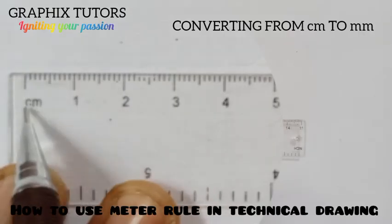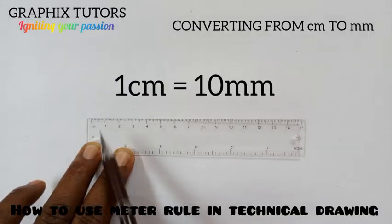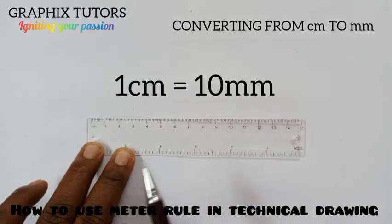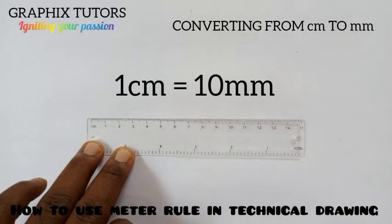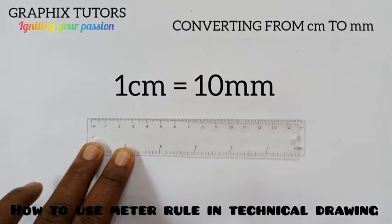So this simply is telling you that for every one centimeter, there is 10 millimeters. For every one centimeter, there is 10 millimeters.